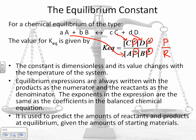Equilibrium expressions are always written with the products as the numerator and the reactants as the denominator. The exponents in the expressions are the same as the coefficients in the balanced chemical equation. And what we do is we use this value to predict the amounts of reactants and products at equilibrium, given the amounts of starting materials. I'm going to show how that happens later on.